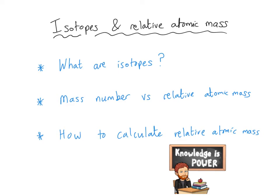Hello everybody, welcome to this GCSE chemistry video about isotopes and relative atomic mass. This video follows on from my introduction to atomic structure video, so if you've not checked that out yet, I recommend you do so first. In this video, we're going to look at what isotopes actually are, and then we're going to move on to look at mass number and compare that to the term relative atomic mass, and we will finish by looking at how we can calculate relative atomic mass when we've been given some information about the isotopes.